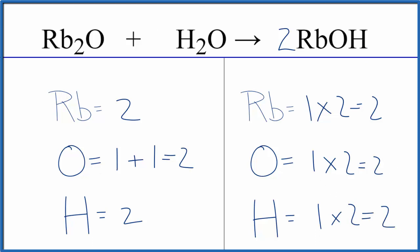If you were asked the states, we'd have solid rubidium oxide. Water would be a liquid. And then if we had excess water, this would be dissolved in water. It'd be aqueous. It's a strong base. If we had just the right stoichiometric ratios here, we would end up with a solid.